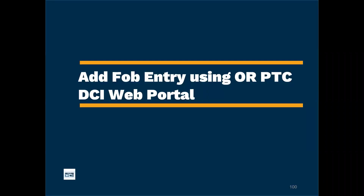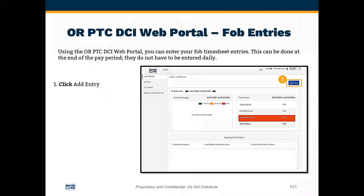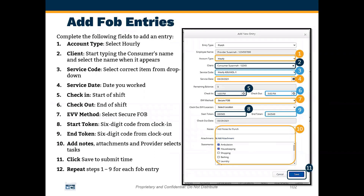Now let's talk about how to enter a FOB entry into the DCI web portal. To add an entry to the ORPTC DCI web portal, click 'Add Entry' in the top right of the homepage. Then complete the form: for account type, select 'Hourly.' Where it says client name, start typing the consumer's name, and once you have three letters, you can select the name from the dropdown.